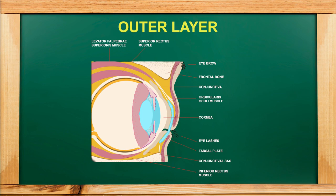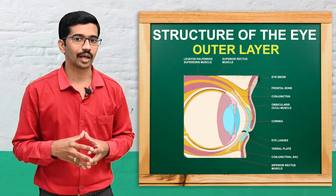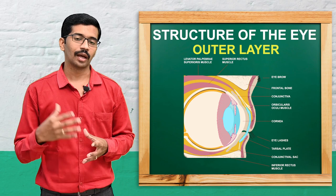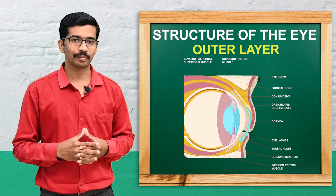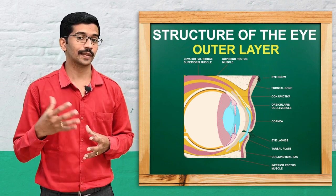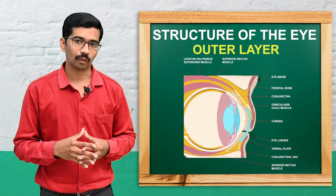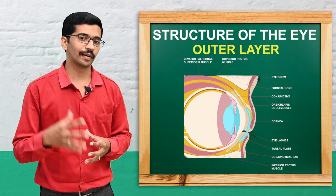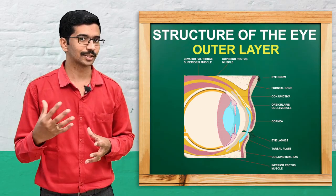The anterior 1/6 of the sclera is transparent and is termed the cornea. Light enters into the eyeball through this cornea, which is made of non-keratinized stratified squamous epithelial cells.